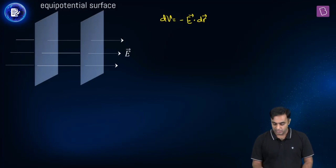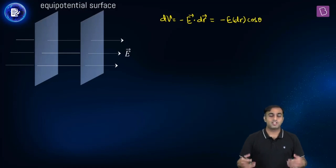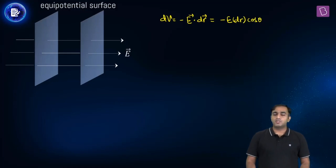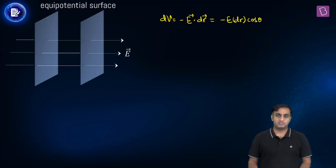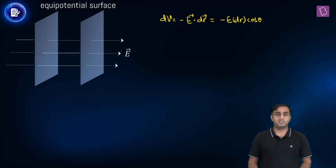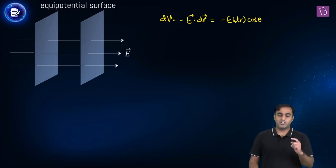This can further be written as minus E dr cos theta. If you choose two points A and B, the displacement vector from one point to another is represented as dr vector. The potential difference between them is dV and the electric field in the region is represented as E vector. Angle theta is the angle between dr vector and E vector.